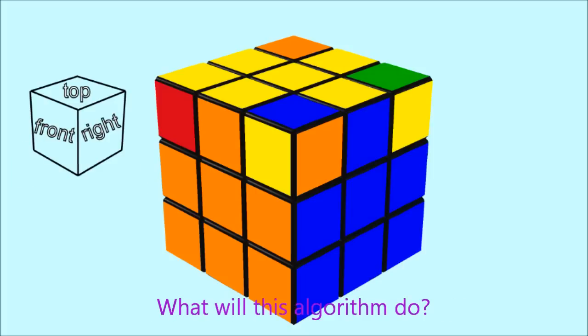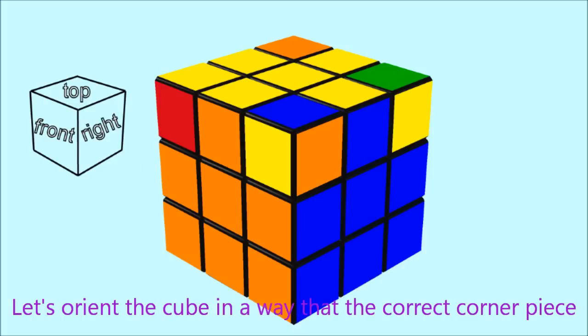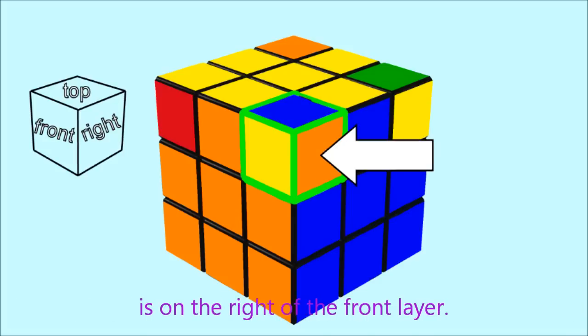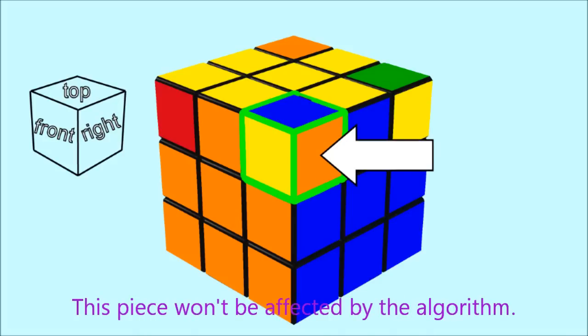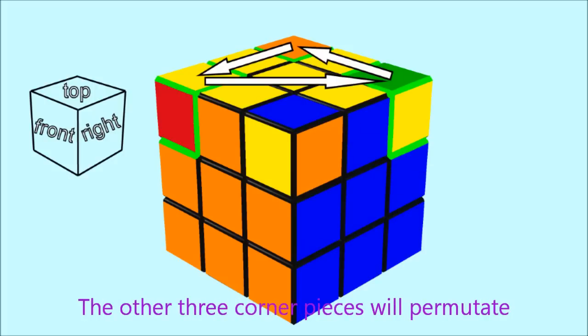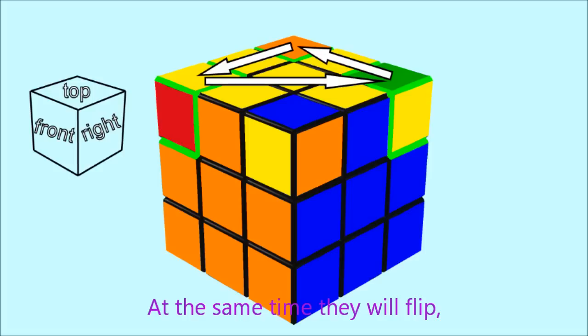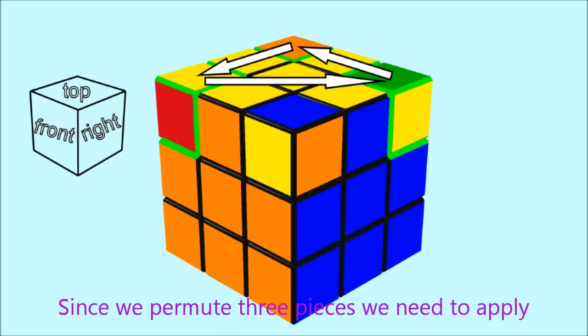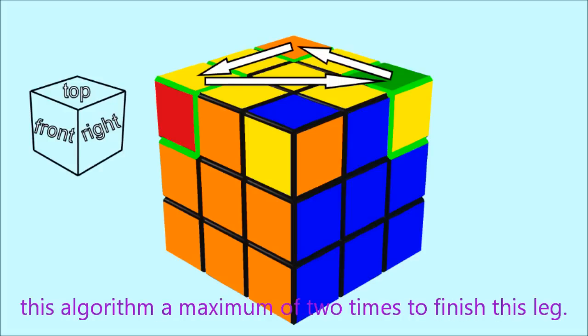What will this algorithm do? Let's orient the cube in a way that the correct corner piece is on the right of the front layer. This piece won't be affected by the algorithm. The other three corner pieces will permutate counterclockwise. At the same time they will flip, but we don't care about this right now. Since we permute three pieces, we need to apply this algorithm a maximum of two times to finish this step.